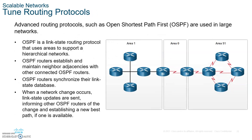OSPF requires that everything connects to backbone Area 0, which makes it very easy to expand — OSPF can reroute itself automatically. If your company grows, you can easily create areas, but they all have to connect to the backbone. This works well for large campuses using multi-area OSPF.